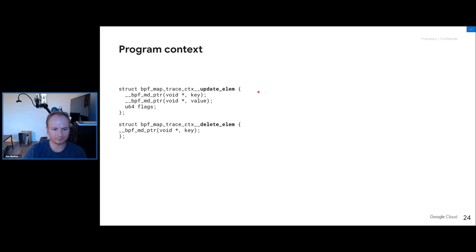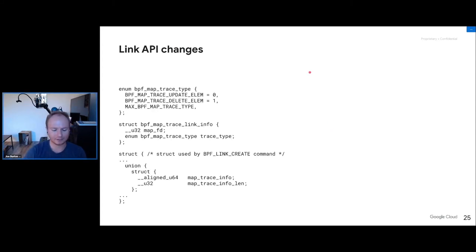There is one context struct for each supported map operation. The current patch set supports bpf_map_update_elem and bpf_map_delete_elem — we'll discuss handling more in the open questions. To attach programs to maps, we use bpf_link_create with an enum having one value per traceable operation (update and delete), a struct taking that enum and the map file descriptor, and pass a pointer to this struct with its size for ABI compatibility.